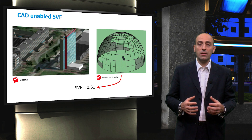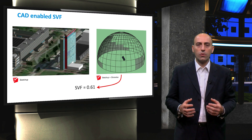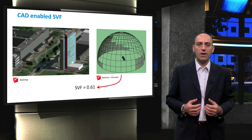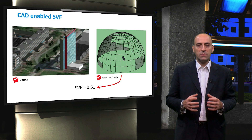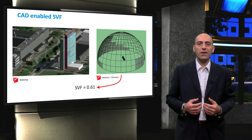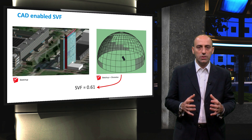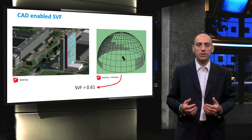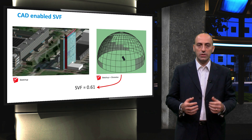This value of 0.61 is obtained after considering both the tilt angle and the surroundings of the PV system. For comparison, when the same PV system was placed in a free-horizon scenario, its corresponding SkyView factor obtained through the equation approach was found to be 0.82 — a value 34% higher than the one obtained using the CAD-enabled approach. Thus, the SkyView factor calculated with both the tilt angle and the surroundings taken into account will be smaller than the SkyView factor based only on the tilt angle.